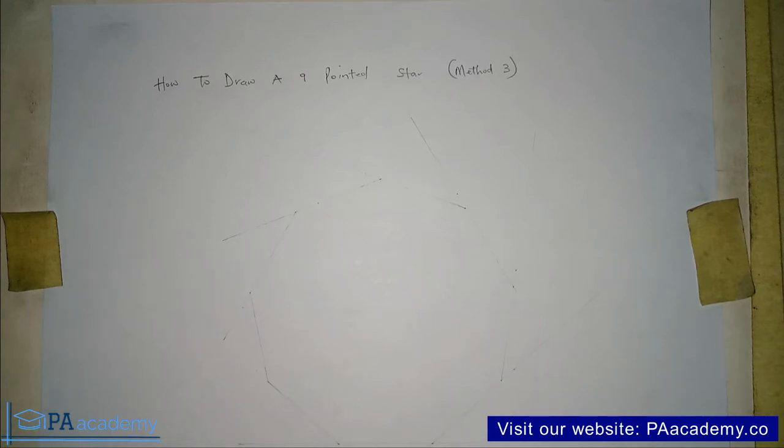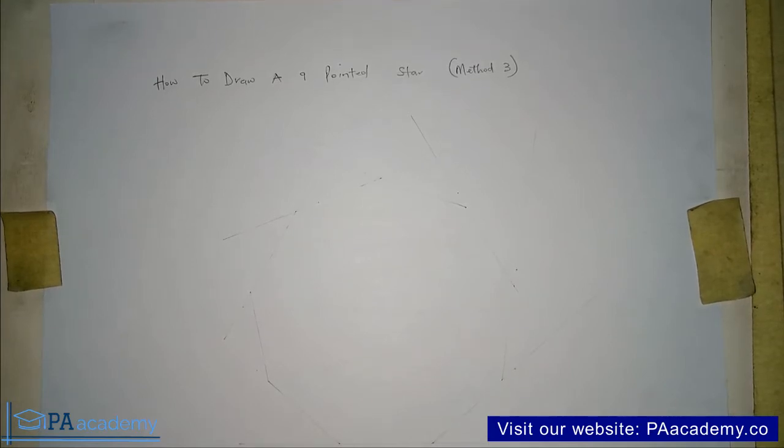Hello everyone and welcome back to PA Academy. This is part three of the video series How to Draw a Nine-Pointed Star. We've looked at method one and method two in the last two parts of this video. If you missed that, kindly check the description of this video and you'll find the link to those videos. But do make sure you watch this one first.